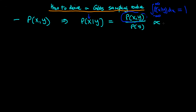The conditional probability density of x given y is proportional to the joint distribution of x and y. The conditional distribution is essentially the joint distribution up to a constant of proportionality. We can remove everything in the joint which doesn't involve x, and that gives us a functional dependence of the conditional distribution on x.